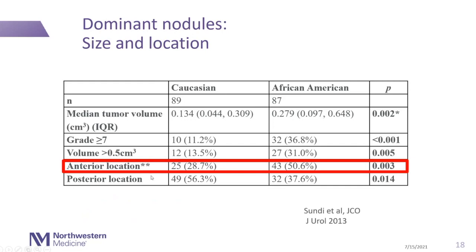Our data shows a high prevalence of anterior tumors in African-American men — 50% in our series of around 87 African-American men — in a pre-MRI era at final pathology. Potentially the landscape of who we biopsy and how has changed. But this idea that there are aggressive anterior tumors within the prostate does exist.